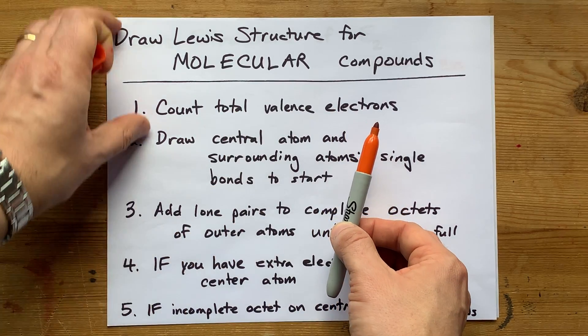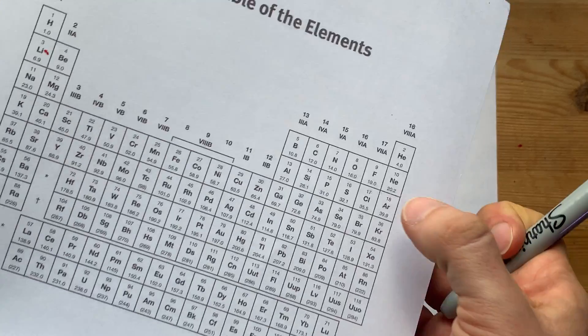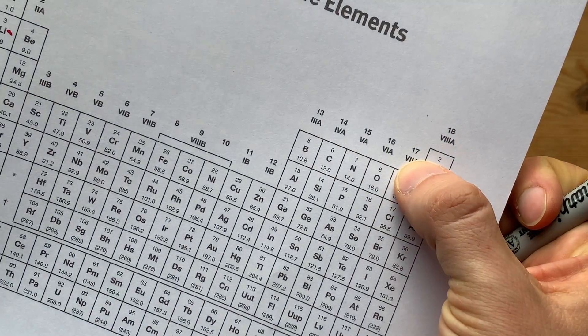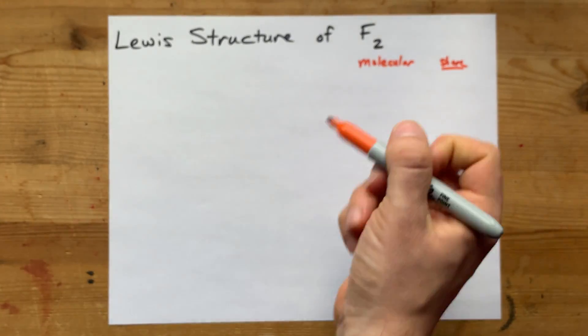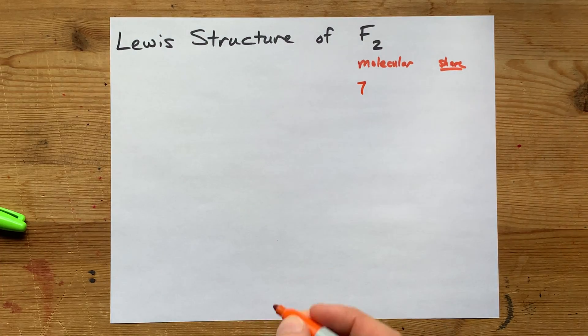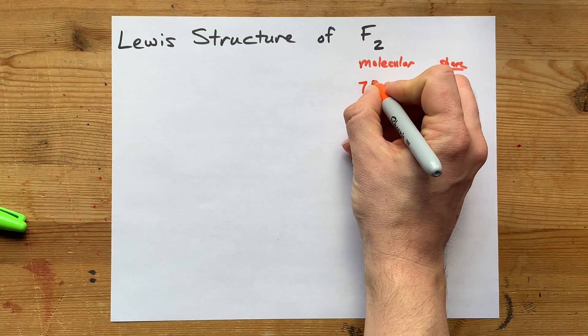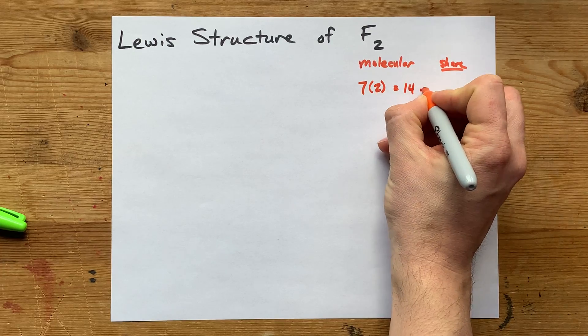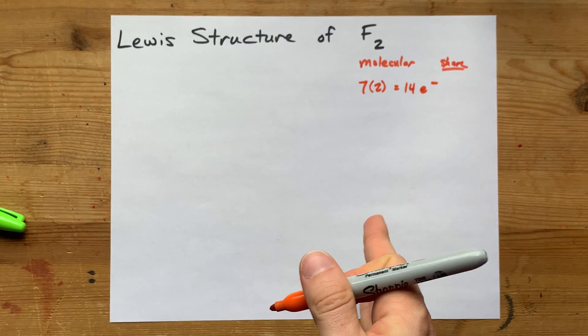Count the total number of valence electrons that the molecule has. Well, fluorine is in group 17, and so it brings seven valence electrons with it. But there are two of them, so double it. That's 14 electrons total for this structure.